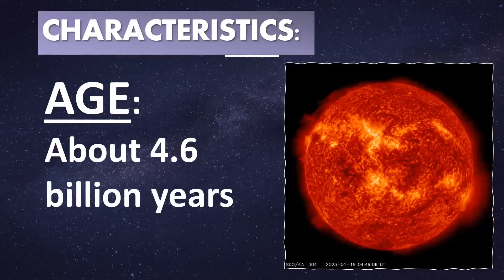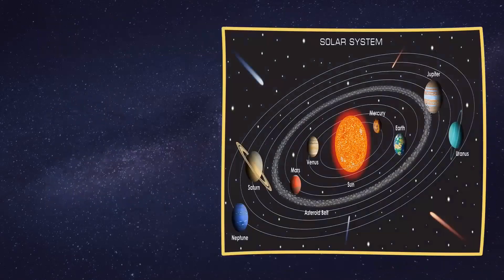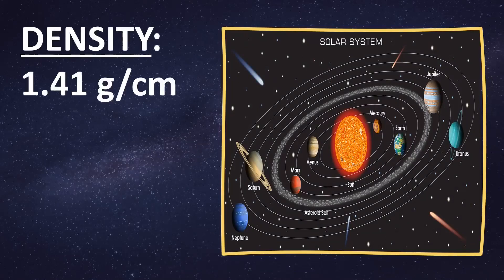Here are the characteristics: The age of the sun is about 4.6 billion years. It has a life expectancy of about 10 billion years, which means it is middle-aged in its stellar evolution.